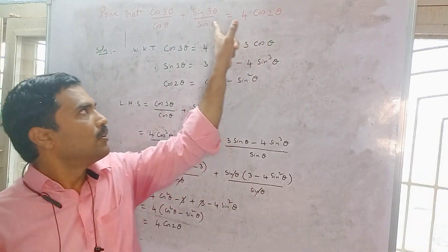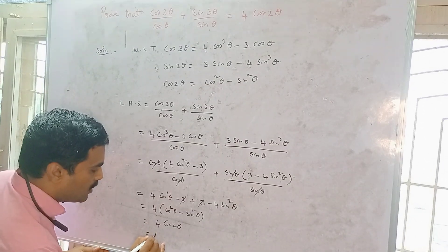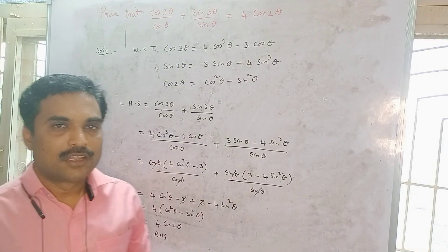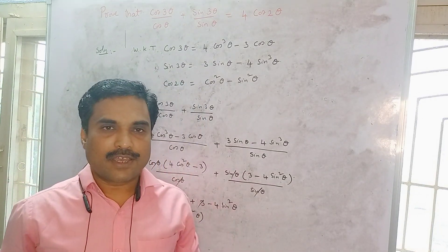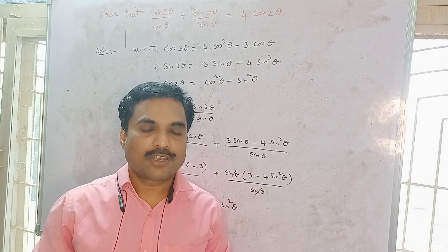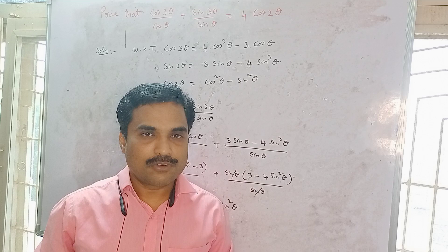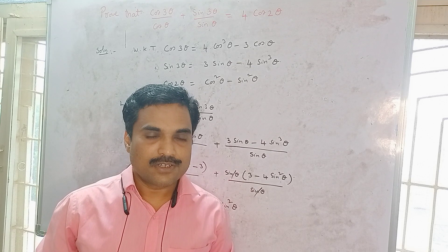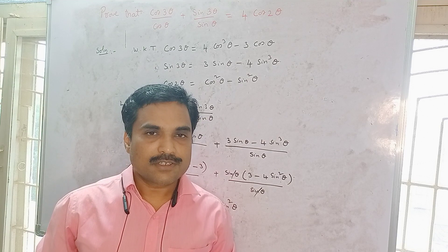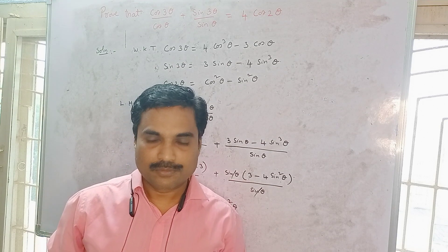In the original problem we had to simplify to 4cos 2θ, and we have arrived at that result, so the proof is complete. If you want to do more problems of this kind, please click the link in the description. These videos are particularly useful to polytechnic and engineering students. If you like my video, please subscribe to my channel Yanam Takshashila for further updates. Thank you for watching.